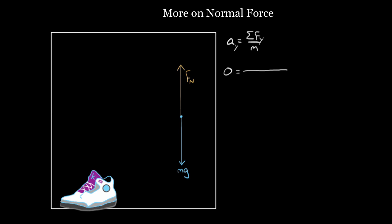For the net force, I've got an upward normal force, so I'm going to make that positive. If Fn represents the magnitude of the normal force, this would be positive Fn — upward is positive. And then I've got this downward gravitational force, and if mg represents the size of the gravitational force, I'm going to put a negative here to represent that it's down. Dividing by the mass, I get that this net force divided by the mass has to be zero. Multiplying both sides by the mass, I get that zero equals the normal force minus mg, so the normal force equals mg.